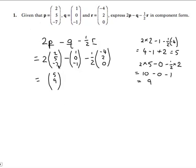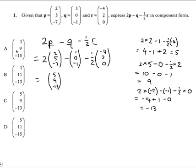Similar set of calculations for the z components: two lots of minus seven, minus minus one, minus a half of zero. So two times negative seven is negative 14. When we take away negative one, it's the same as adding one. Taking away a half of zero is just taking away zero. So minus 14 plus one would be minus 13. That's your z component.